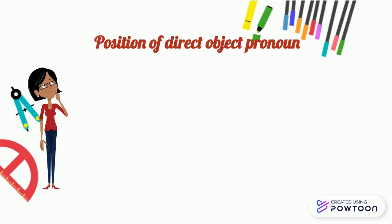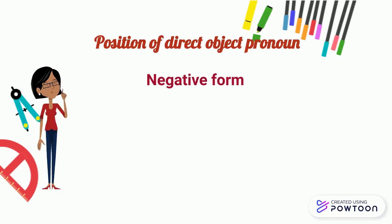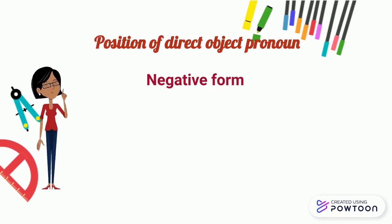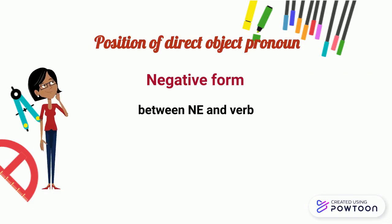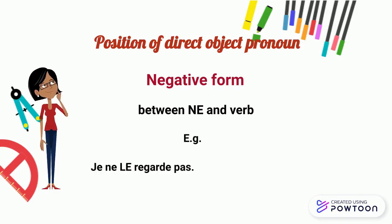At the negative form, the direct object pronoun is placed between ne and the verb. For instance, je ne le regarde pas — I am not watching him.